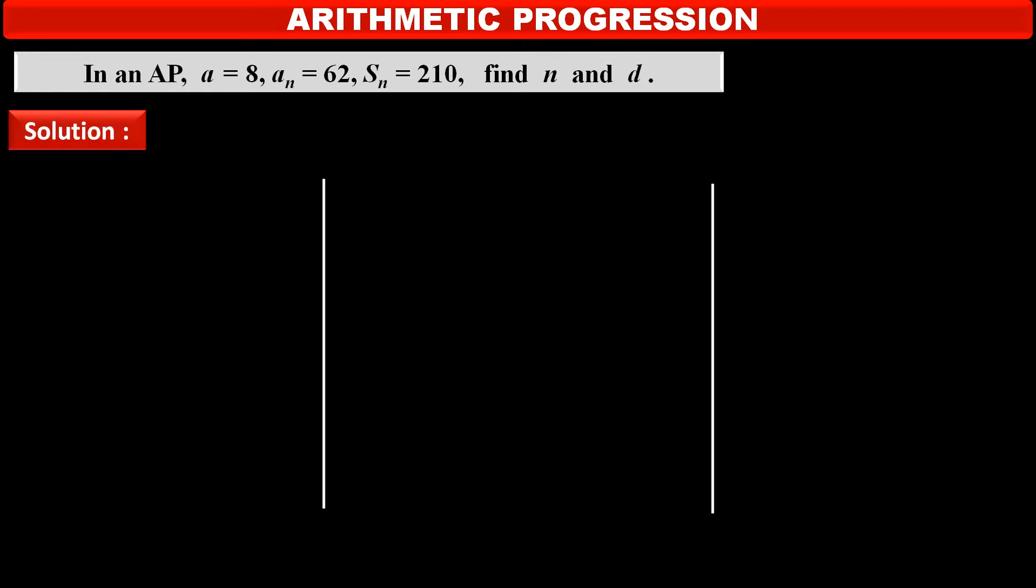Solution. In the given AP, arithmetic progression, first term A is equal to 8, Nth term AN is given 62 and sum of N terms, sum of first N terms SN is given 210.